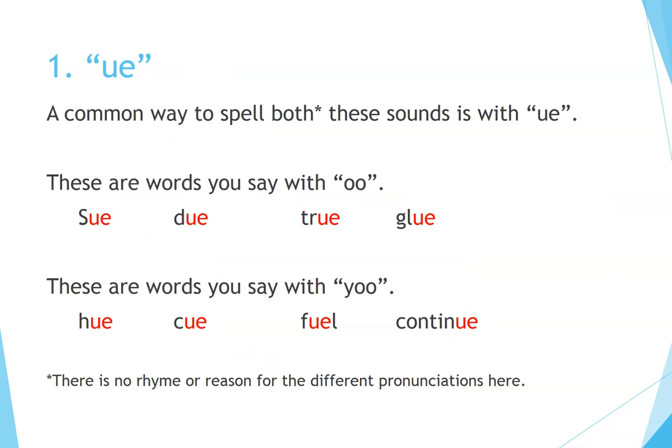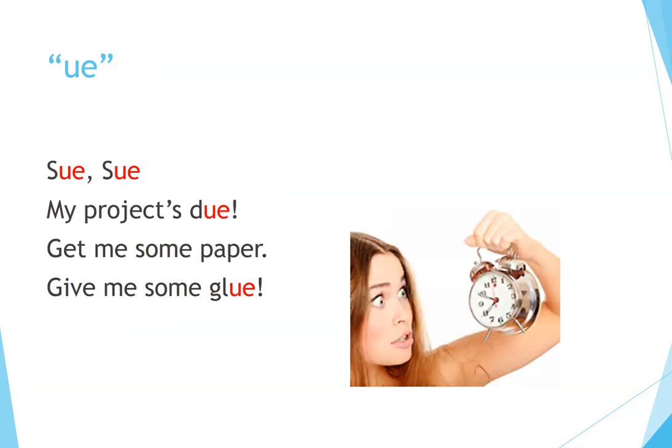Number 1: U-E. A common way to spell both these sounds is with U-E. These are words you say with OO, and these are words you say with U. There is no rhyme or reason for the different pronunciations here. U-E: Sue, my project's due, get me some paper, give me some glue.